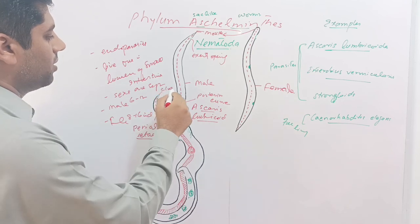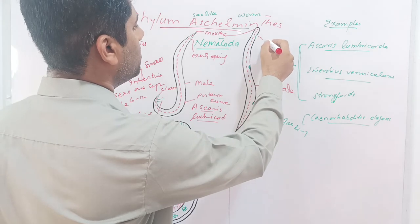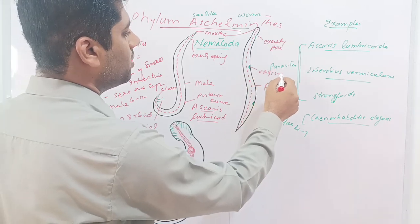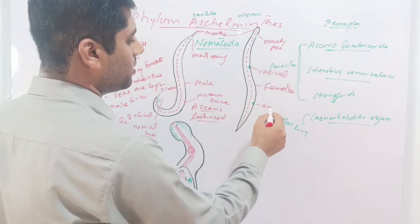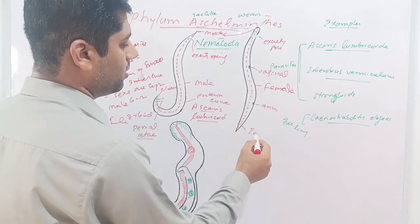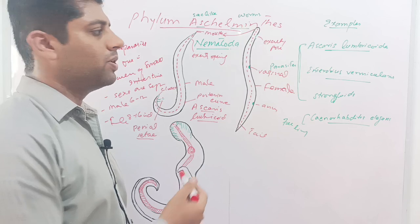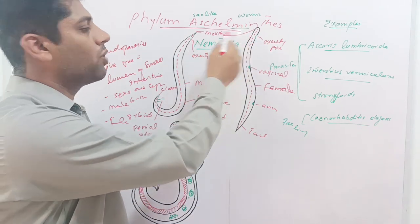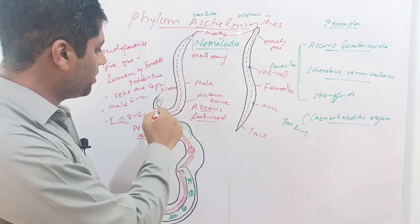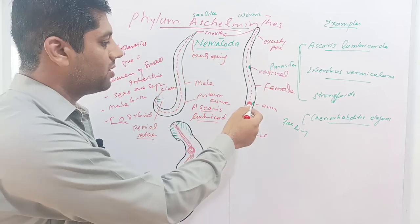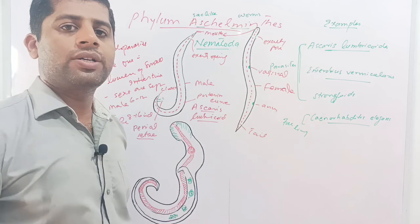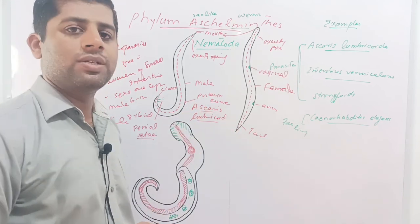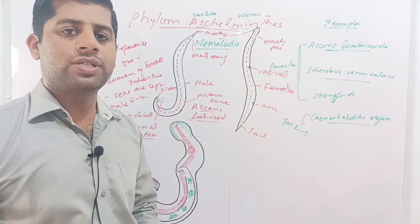In the female, there is a mouth, excretory pore, female vaginal opening, anus, and a pointed tail. In both male and female, the anterior ends bear mouth and excretory pores and are pointed. In the male, the posterior tail is curved like a hook, while in the female the tail is straight, elongated, and pointed — not curved or hooked. This is the sexual dimorphism present in Ascaris.